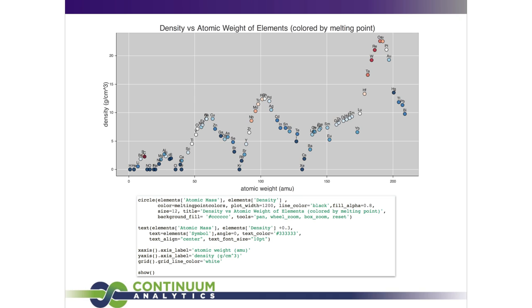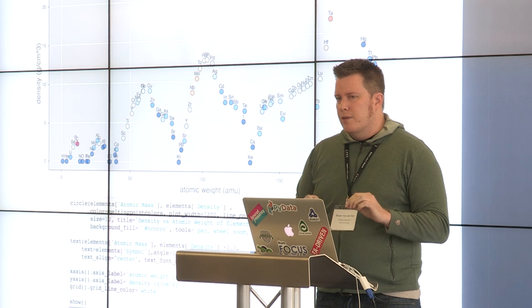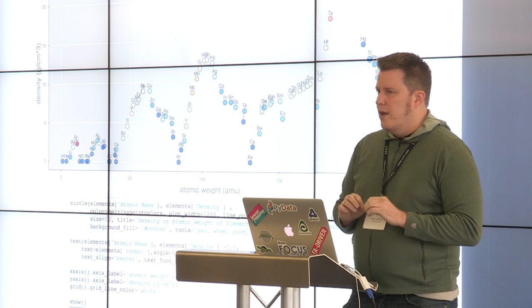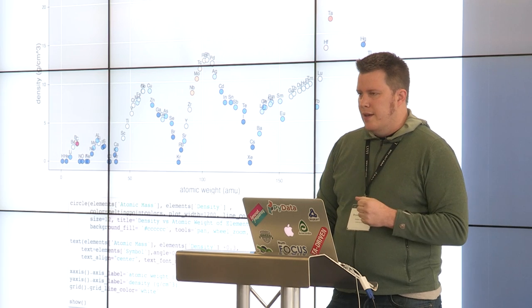Here's an interesting plot contributed to Bokeh as a PR — someone created it and wanted to share it. You can see the simplicity of the code: we have data describing our periodic table of elements, and we simply map that to circles and text. We set a few parameters for styling and show the plot, and it shows up. The idea is to make a very simple interface at the top level that handles the 90% case, but still provide a low-level interface when needed.